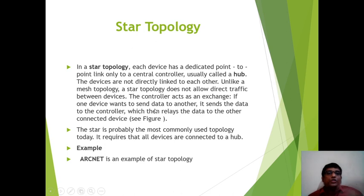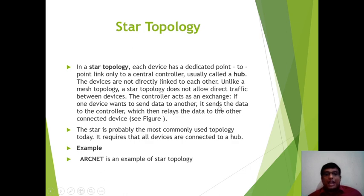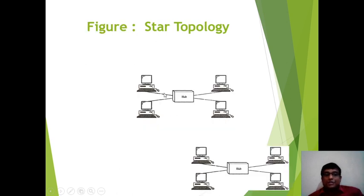Star topology does not allow direct traffic between devices. The controller acts as an exchange — if one device wants to send data to another, it sends data to the controller (hub), which then relays the data to the other connected device. Each device sends its data to the hub first, then the hub relays it to the destination device.